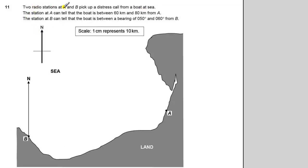So we're told two radio stations A and B pick up a distress call from a boat at sea. Station A can tell the boat is between 60 and 80 kilometres from A. Station B can tell the boat is between a bearing of 50 and 60 degrees from B.